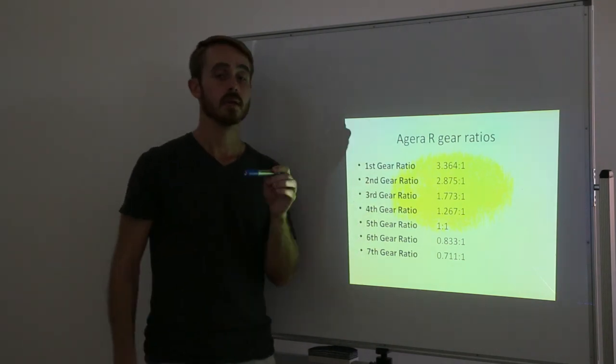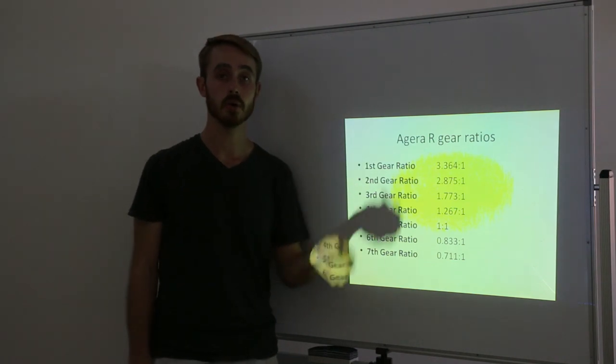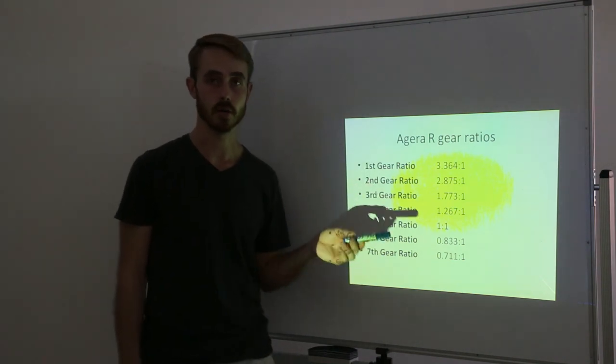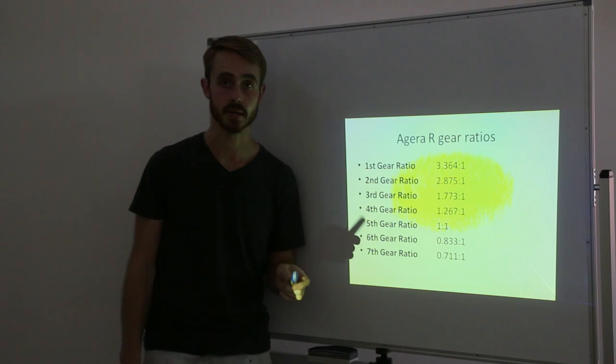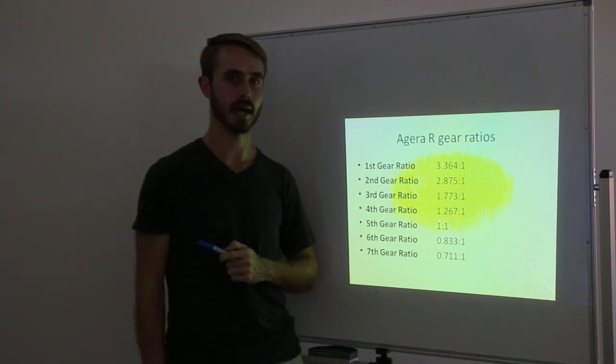From the previous diagram, the Regera's final drive has a torque multiplication, or a reduction ratio, of 2.85 to 1. From this, we can now start to do some calculations.